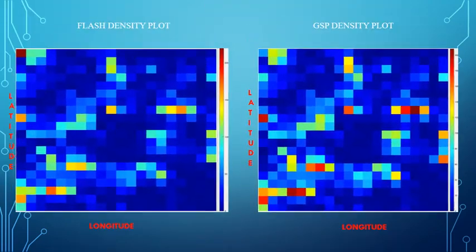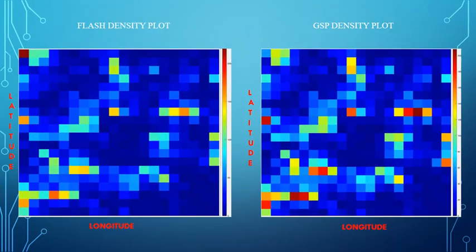On this slide, on the left is a flash density plot and on the right is a ground strike point density plot. The difference between the two is that the GSP density plot has more ground strike points than the flash density plot, because the flash density plot does not take into account the multiple ground strikes of each flash. This difference is also observable on the images themselves. The GSP has more red pixels than the flash density plot, which shows that it has more ground contact points and estimates the lightning risk more accurately.